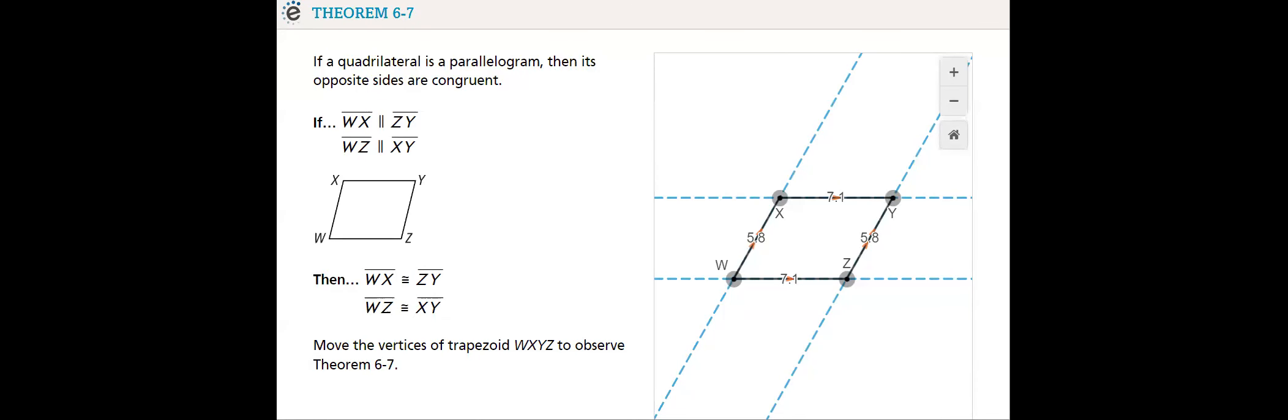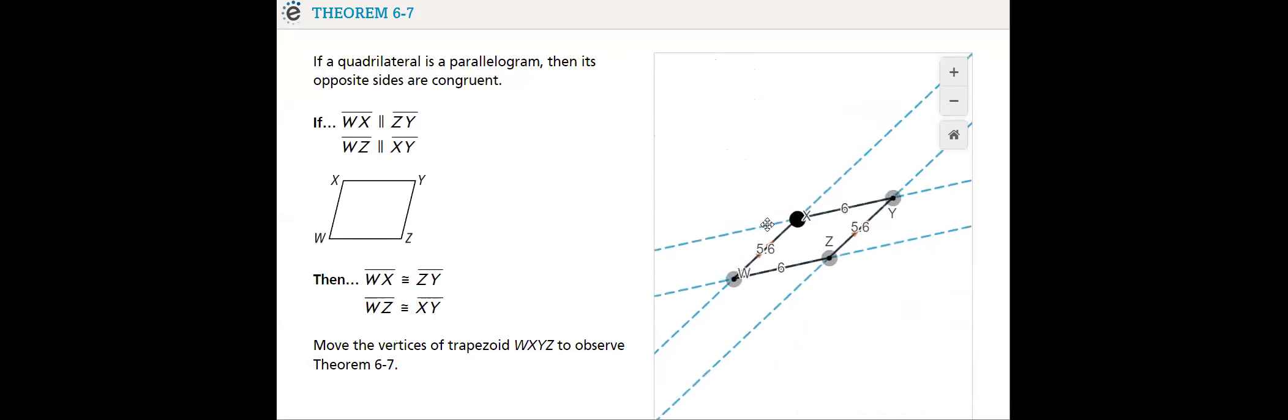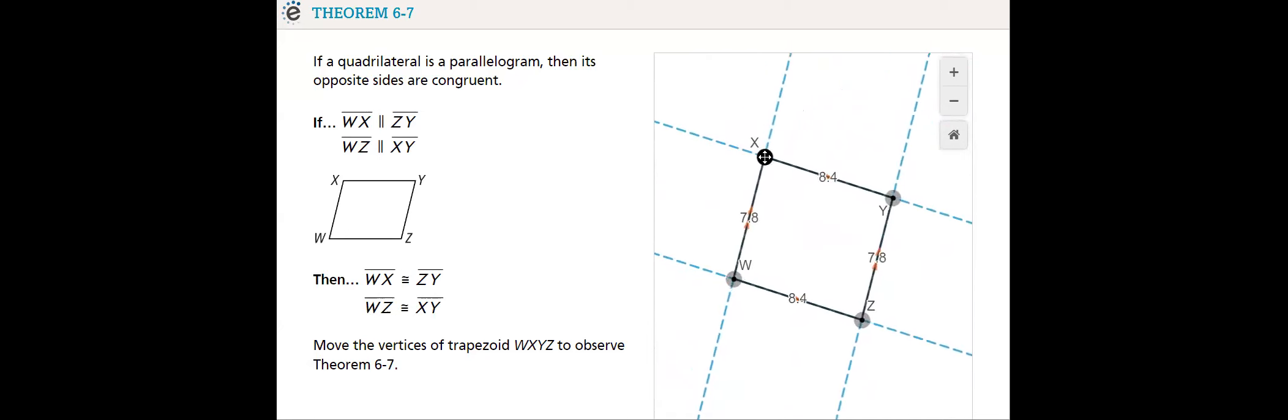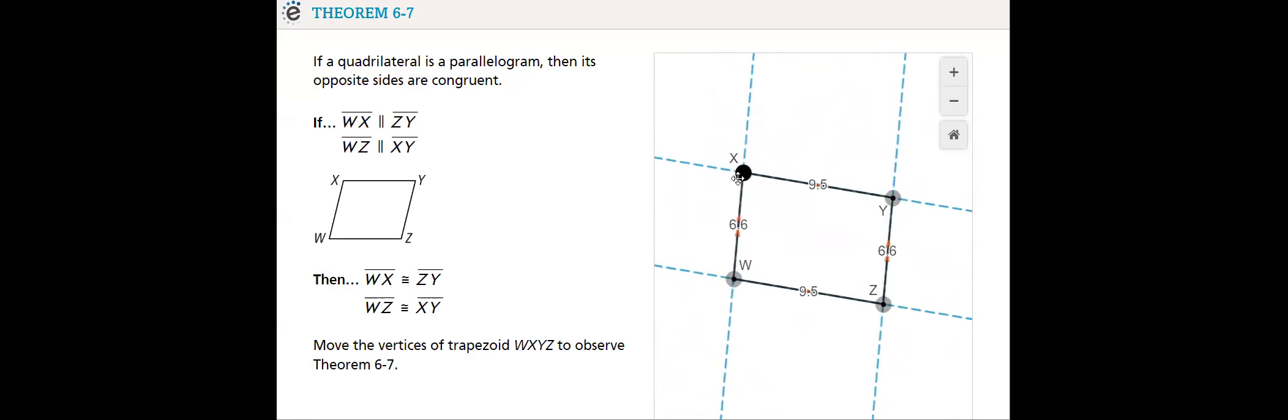Then, we have Theorem 67. If a quadrilateral is a parallelogram, then its opposite sides are congruent. We will see how is that possible, no matter how much I extend it. Opposite sides are always parallel, since its opposite sides are parallel and congruent, since it is a parallelogram.